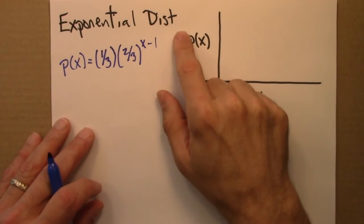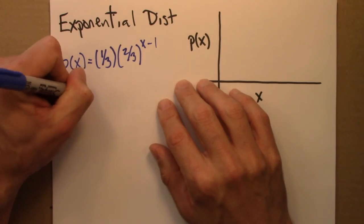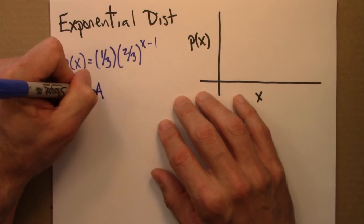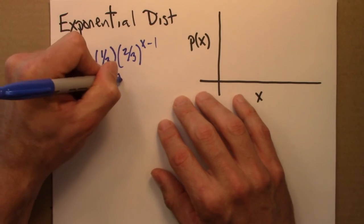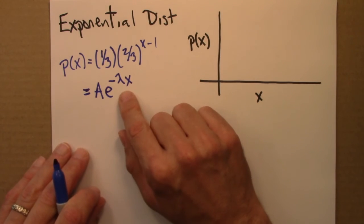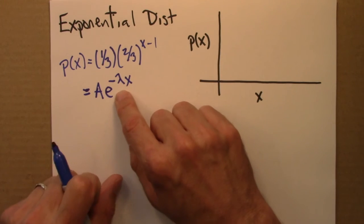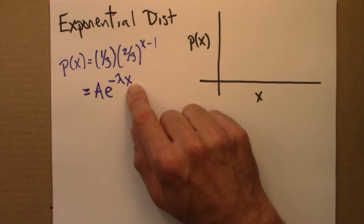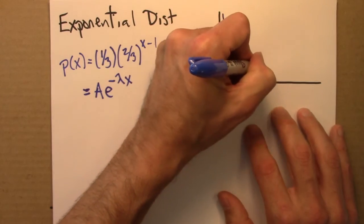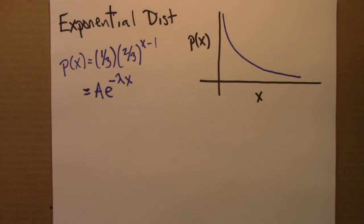So the exponential distribution that we looked at here was of this form. And more generally, these are going to have a form, some constant and then some decaying exponential. There are a number of different ways to write these types of distributions. But the main thing is that the variable x is up in the exponent. And if we were to plot this, we again get something that's going to look like this.